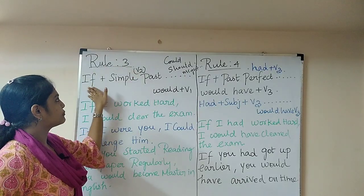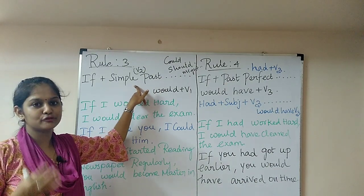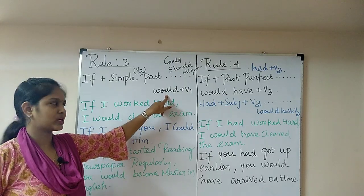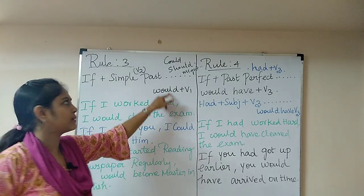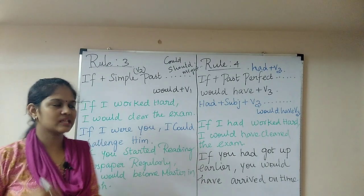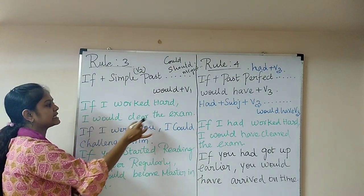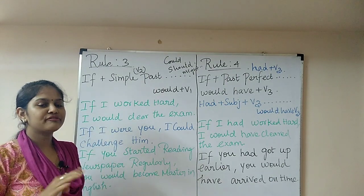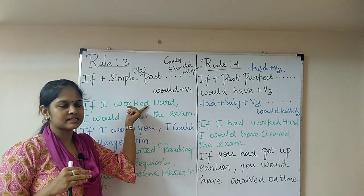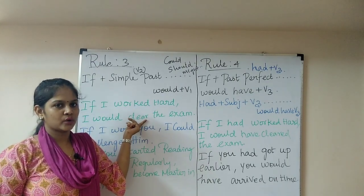Rule number three: if + simple past in the if clause, and 'would + V1' in the main clause. Instead of 'would,' we can also use 'could,' 'should,' or 'might.' Example: 'If I worked hard, I would clear the exam.' The if clause is in simple past and the main clause uses 'would + V1.' Another: 'If I were you, I could challenge him.' When talking about imagination or a wish, we use 'were' instead of 'was' — 'if I were you.'